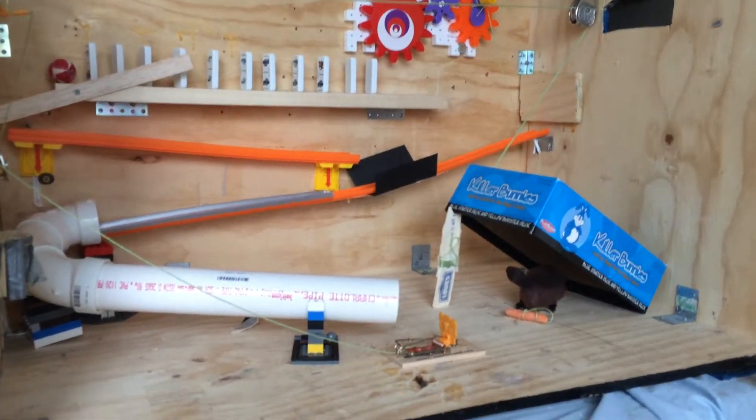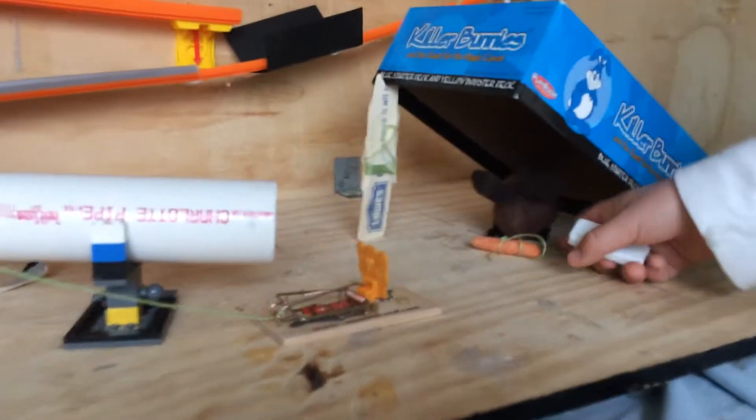Hi, my name is Brody Hanson, and this is my Trap the Bunny project. So, it's going to start with him pulling on this carrot, with trans gears, which knocks over the dominoes.